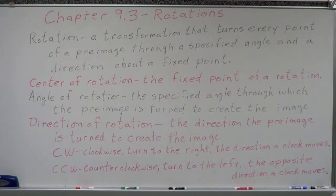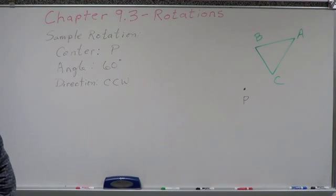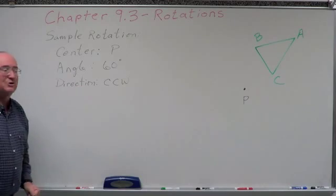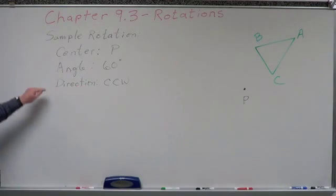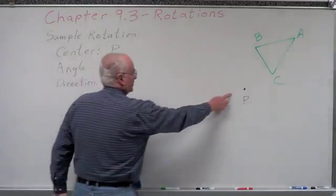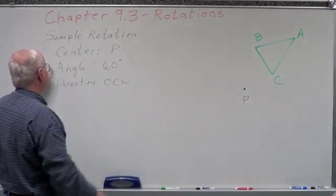Now we're going to do a sample rotation. The method is the same whether on a coordinate grid or plain paper, and I'll use a yardstick and a protractor. Three things we must know before starting: where the center of rotation is, what the angle of rotation will be, and what the direction is. We've chosen point P as the center of rotation, and we'll rotate triangle ABC around point P.